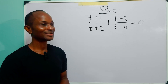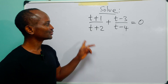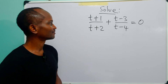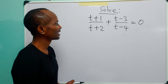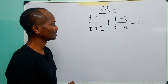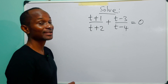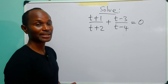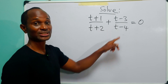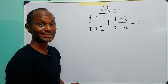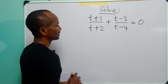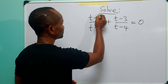Hi and welcome. Today we are going to solve the equation on the board. When we have such algebraic equations, the first thing we do is to try to find a way to combine the two fractions into one single unit. Now, how do we do this?